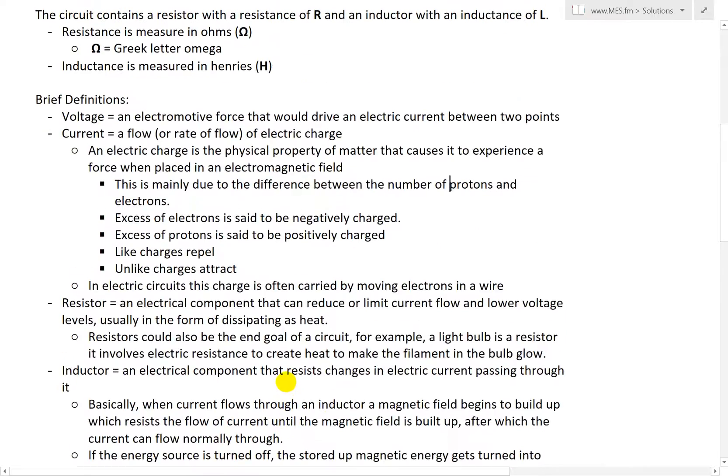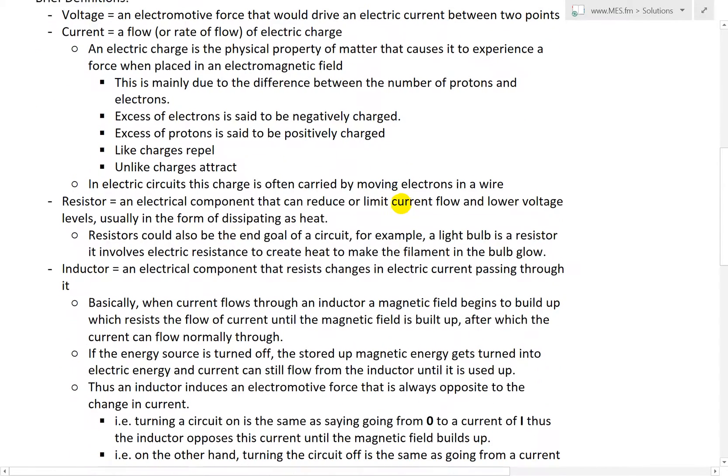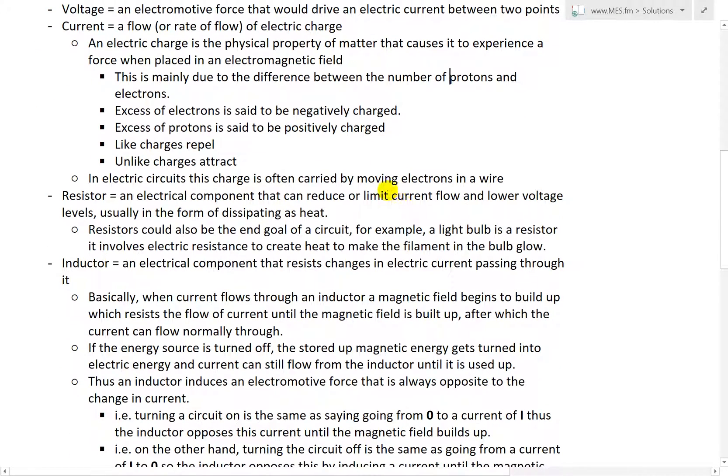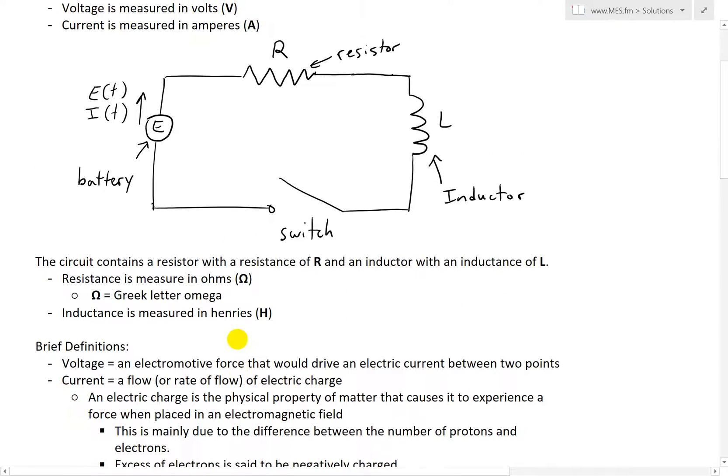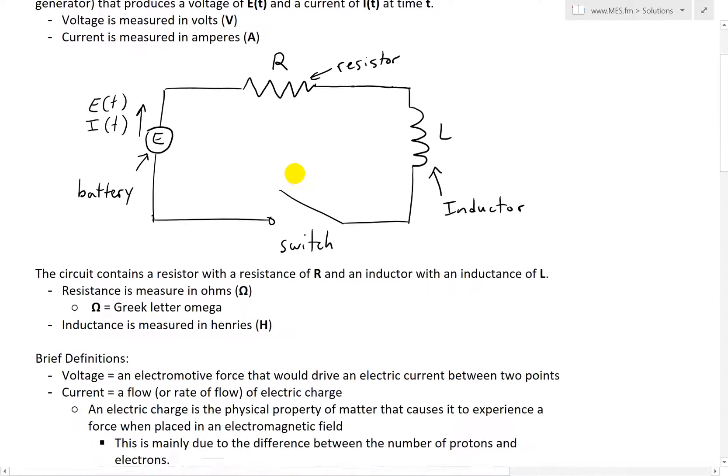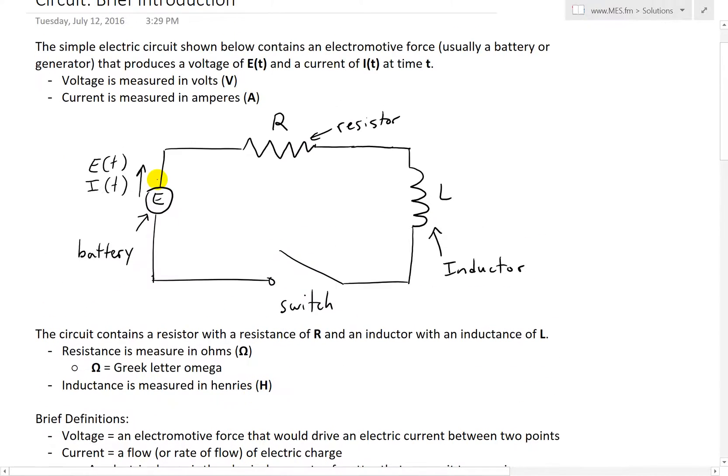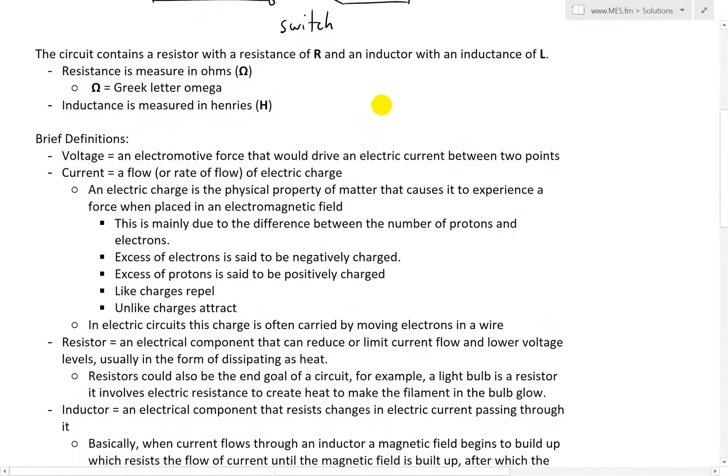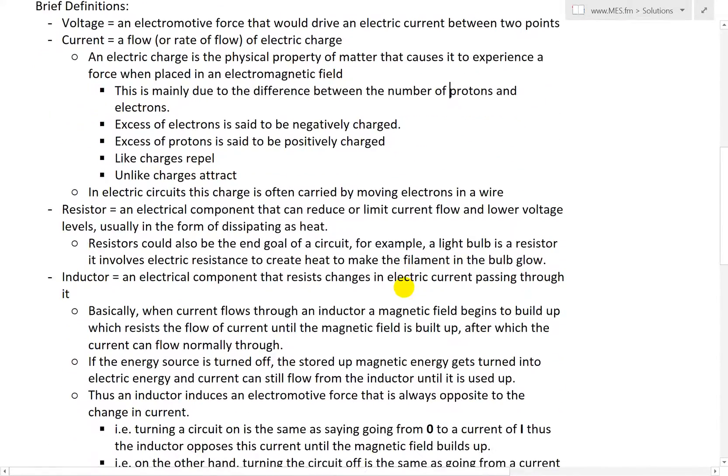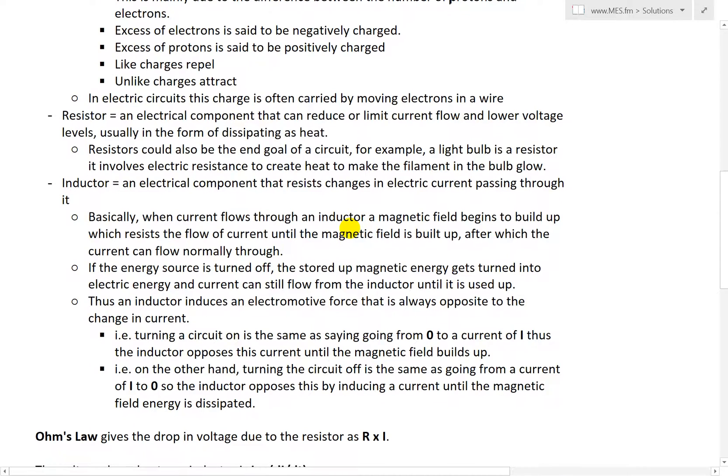But in electric circuits, this electric charge is just carried often by just moving electrons in a wire. So you can think of these as negatively charged particles in terms of electrons - basically just electrons flowing through the wire. The current is the rate of flow of electrons moving across the wire.